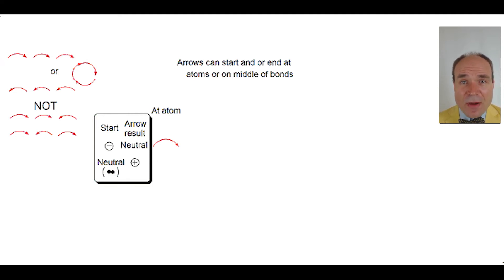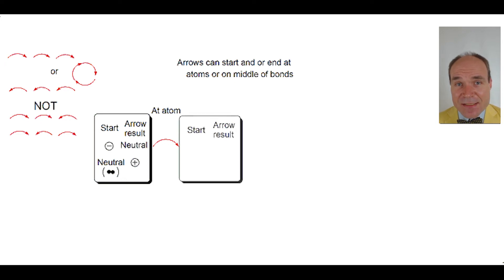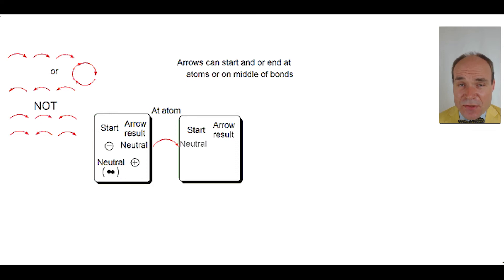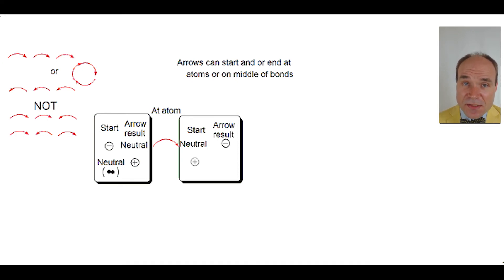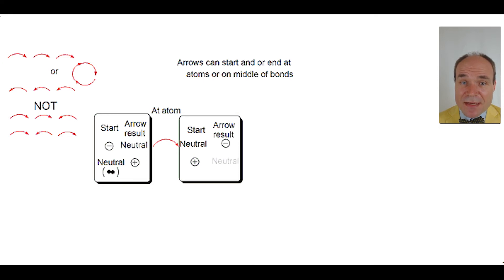Now we'll think about what happens if an arrow ends at an atom. If the atom starts out neutral, the consequence of that arrow movement will make the atom negative. If the atom starts out positive, the consequence of the arrow movement will make it neutral.